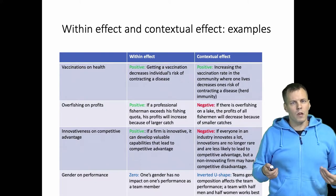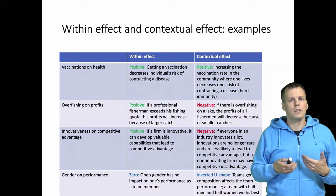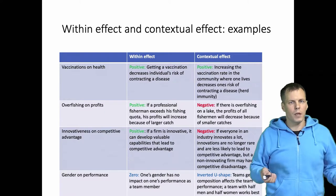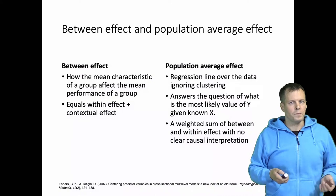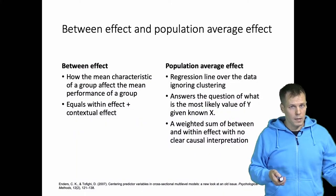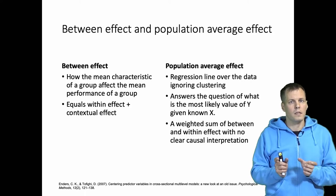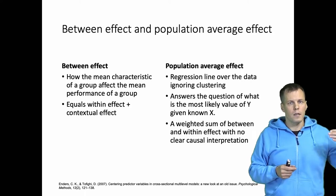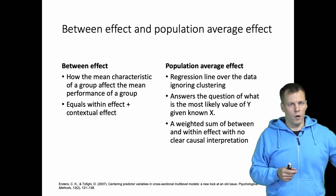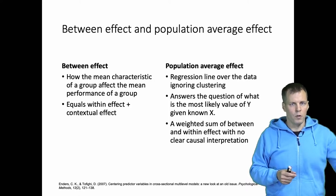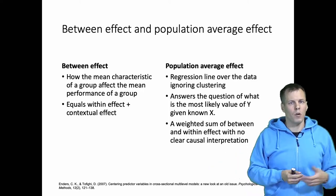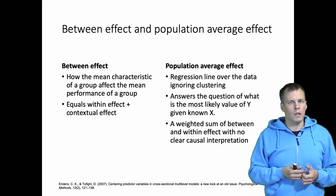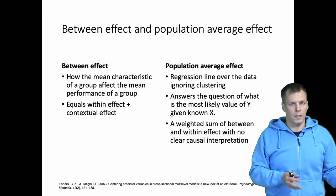So that's the contextual effect and the within effect. How does this relate to the between effect, which is typically introduced in books about multi-level modeling? The between effect is simply the sum of the within effect and the contextual effect. It tells us what is the influence of a mean characteristic of a group on the mean outcome of a group, and it doesn't have as clear policy implications or causal interpretations as the within effect and the contextual effect.